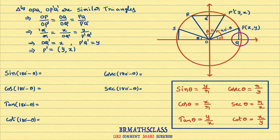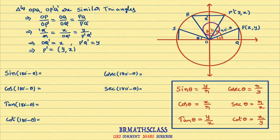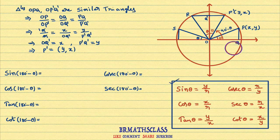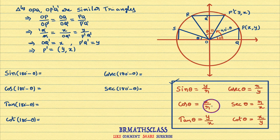Initially, observe that the ray OA is there. The ray OA is rotated through an angle theta such that the ray OP is formed. I consider the point P as (x, y). This means OQ is x and PQ is y. The six trigonometric functions are defined like this: sin is defined as y coordinate divided by radius; cos is x coordinate divided by radius; tan is y coordinate divided by x coordinate.